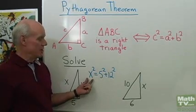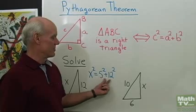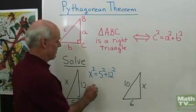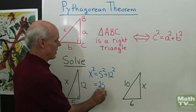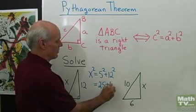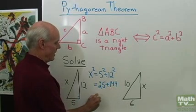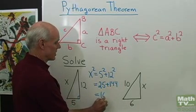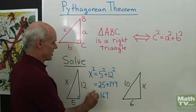So by the Pythagorean Theorem, X squared must be equal to 5 squared plus 12 squared. X squared is equal to 25 plus 144. I add those up, I get 169. That's X squared.